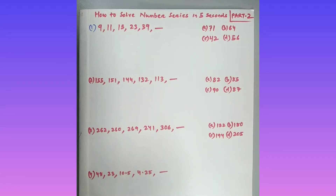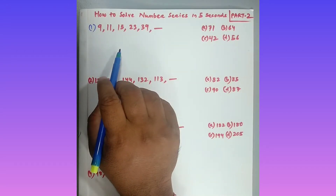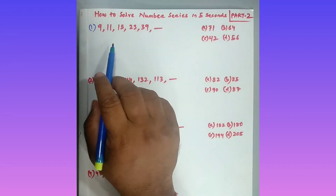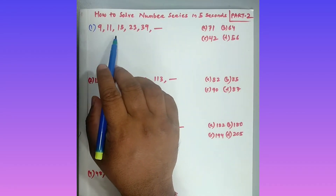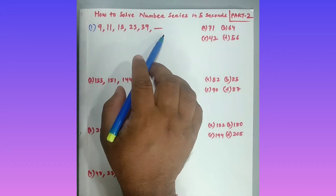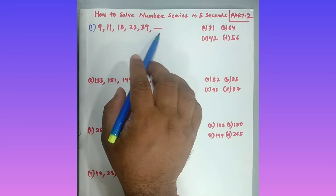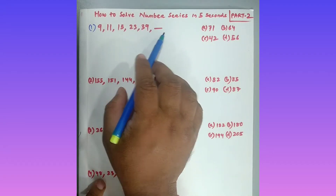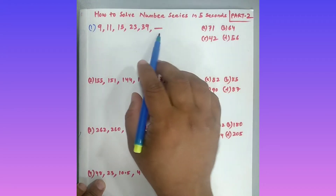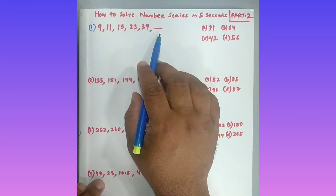Look at question number one that I've already written here: 9, 11, 15, 23, 39, and you are going to find out the missing number. These are the four options given to you — you have to find out the answer.